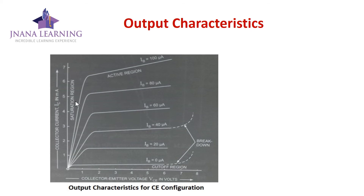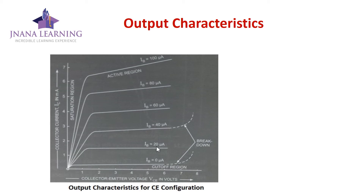Similar to common base configuration, we discuss three regions: active region, saturation region, and cutoff region. In the active region, for small values of base current IB, the effect of VCE on collector current is small, but for large values of IB this effect increases. The shape of the characteristics is similar to common base, but the collector current IC is larger than IB — for example, for IB equal to 20 microamperes, IC is about 1.5 milliamperes.